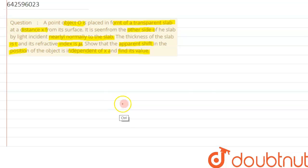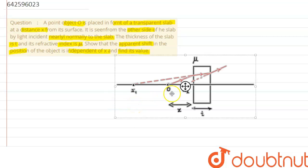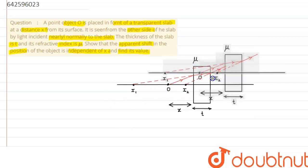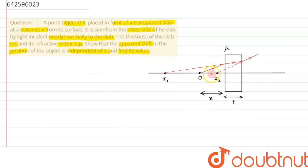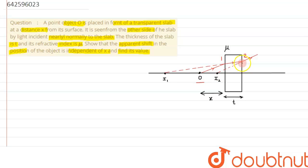If we try to visualize the given situation, we have a slab in front of which an object is kept at a distance x, represented as O. When light is incident on the glass slab at surface 1, and surface 2 is on the other side, at surface 1 the light gets refracted and bends towards the normal since it is moving from a rarer to a denser medium. On the second surface it bends away from the normal as it is moving from denser to rarer medium.